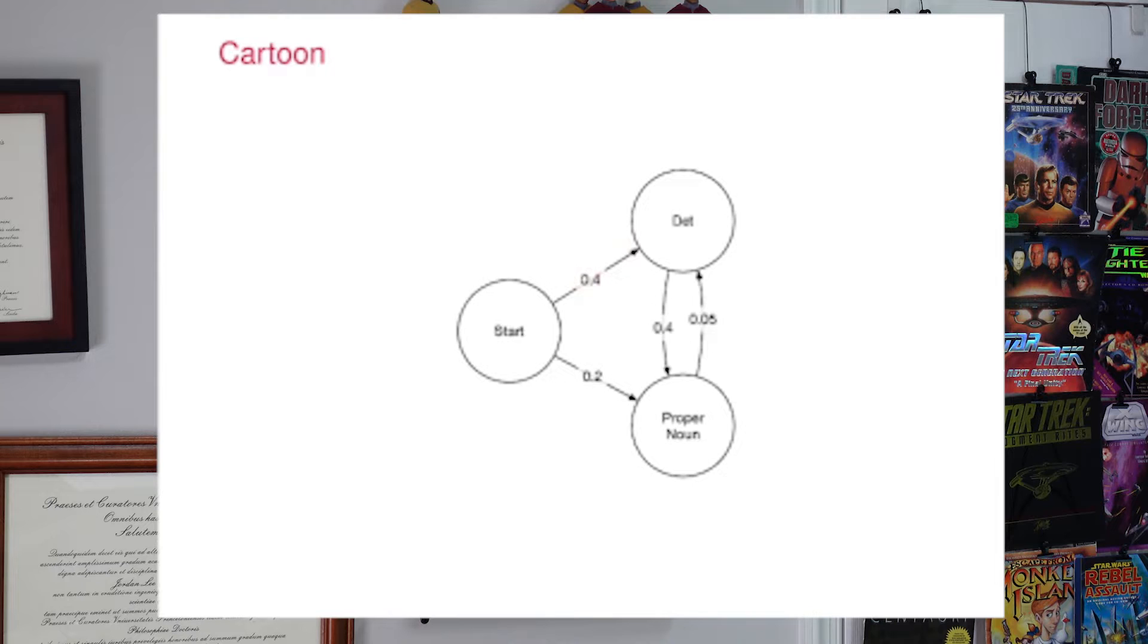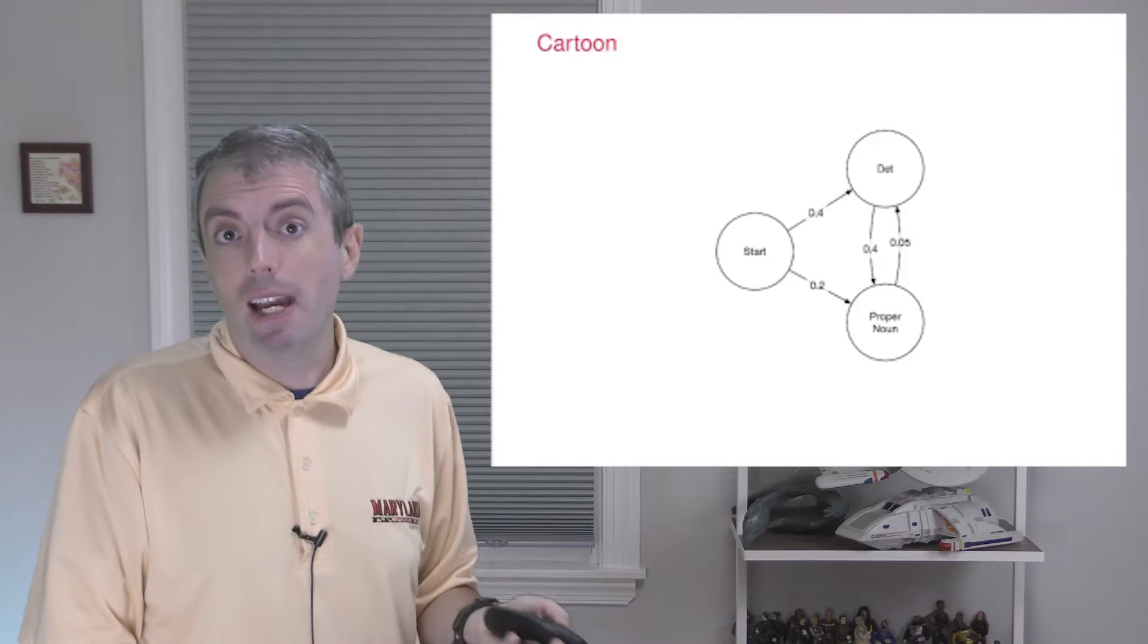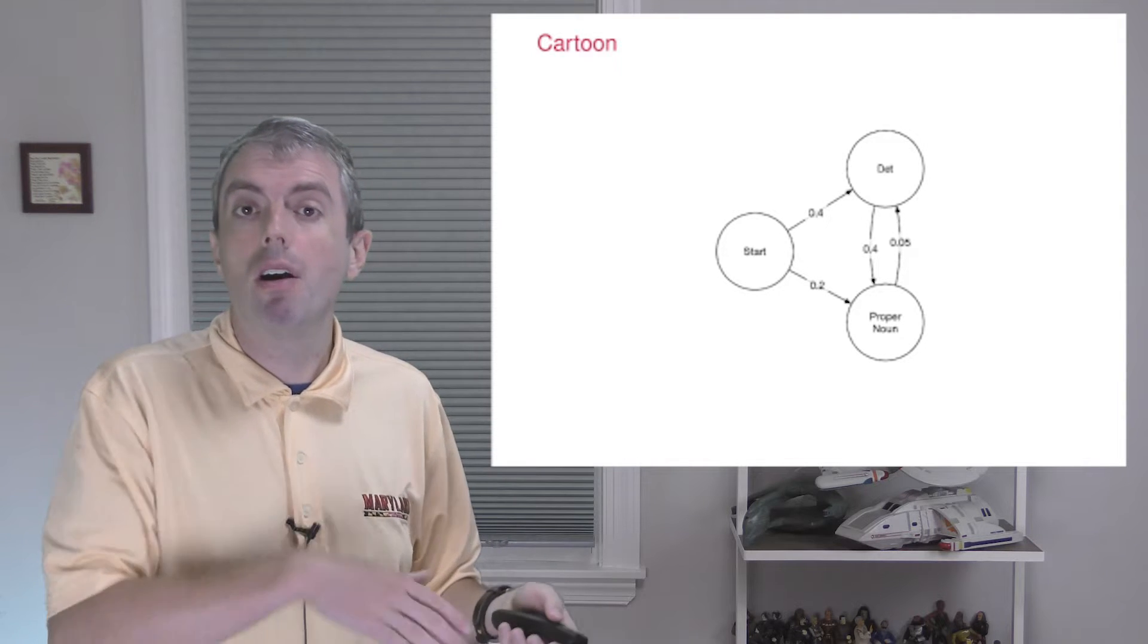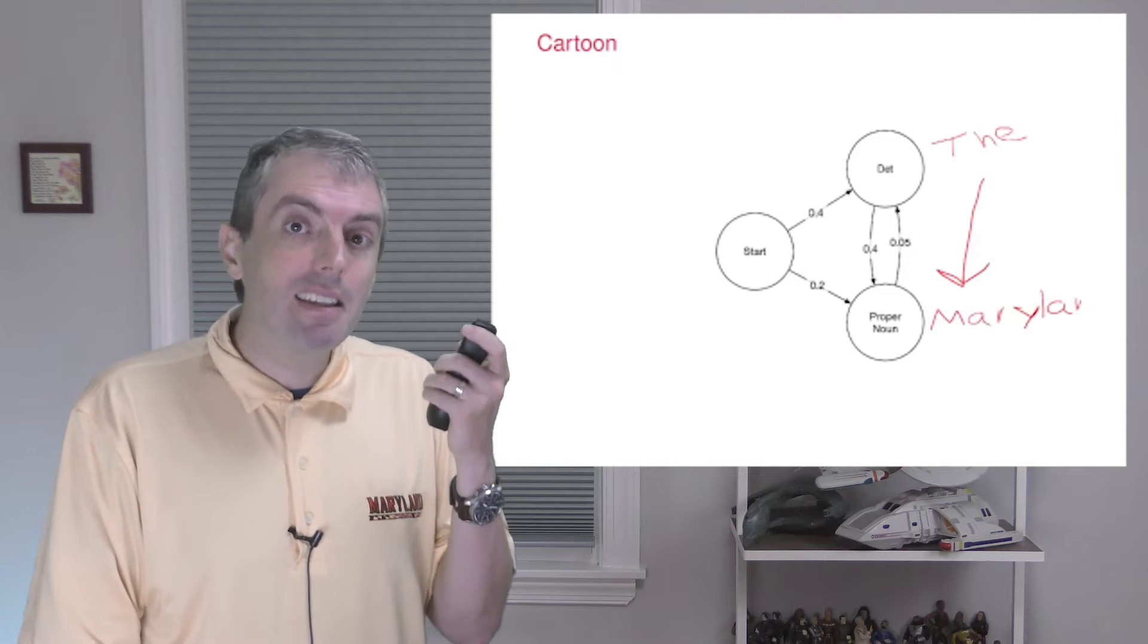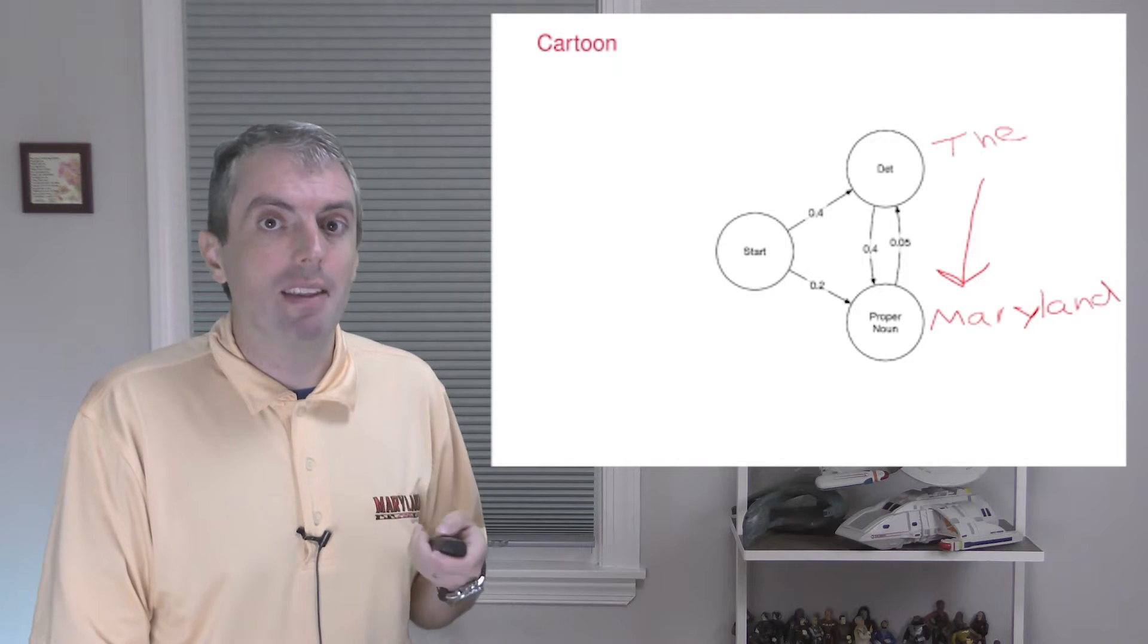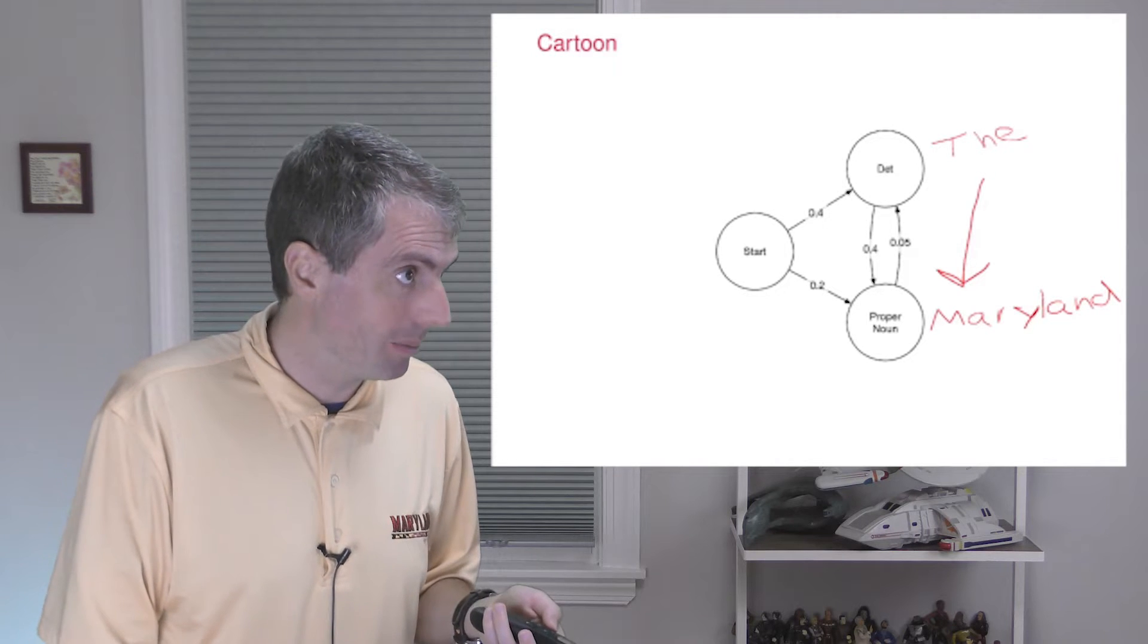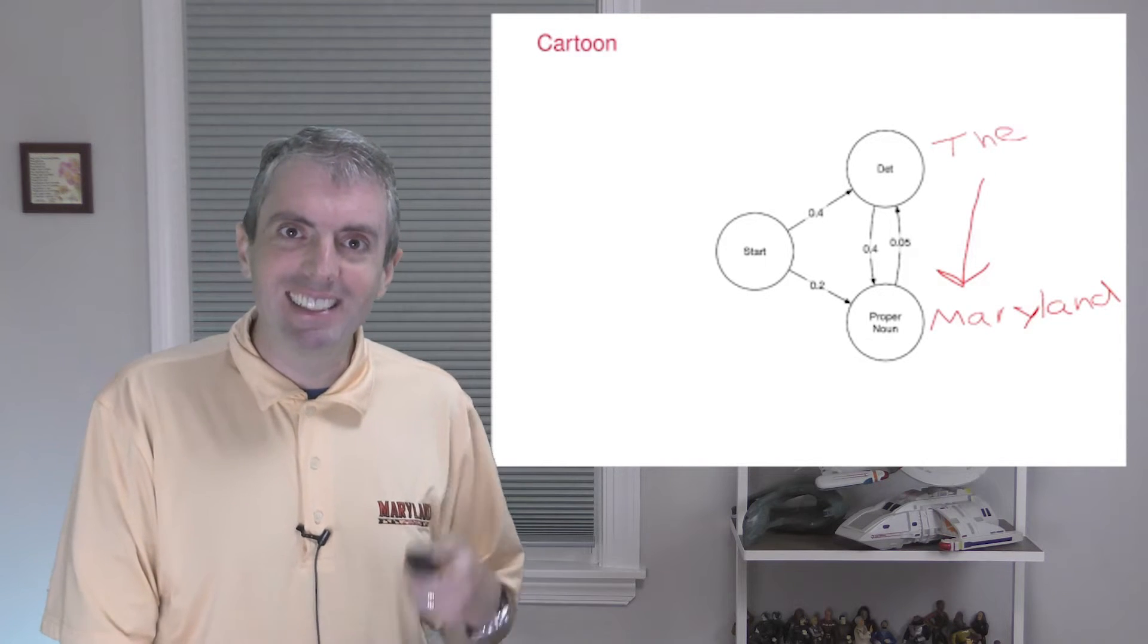Once we get to the determiner, we can go somewhere else. We can't go back to start, but a determiner can go to a proper noun. Think about the Maryland. Now you'll notice that the numbers don't add up to one. That's because I've left out some of the states. I could have also made some mistakes. Let's add some more states to the diagram.